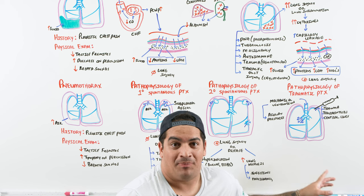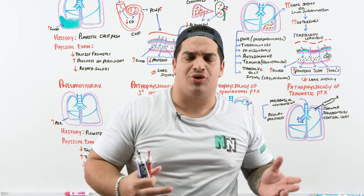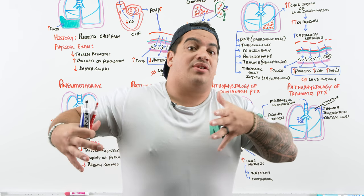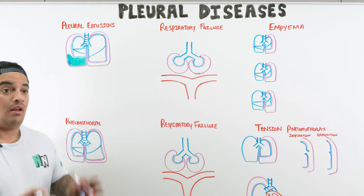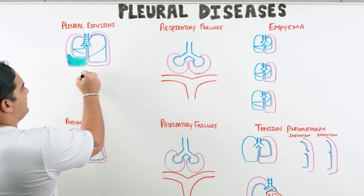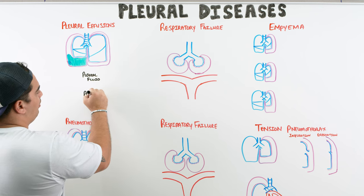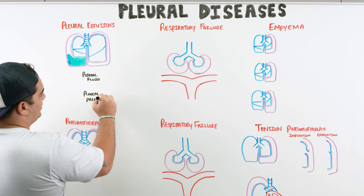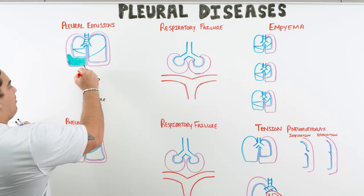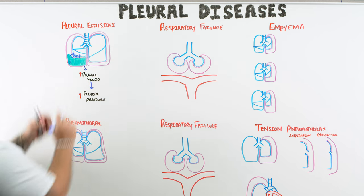We've covered the causes, pathophysiology, and clinical features of pleural diseases. Now let's discuss complications. Starting with pleural effusions: a massive pleural effusion increases pleural pressure, which then compresses the lung tissue, causing the alveoli to collapse — what we call atelectasis, or specifically compression atelectasis.